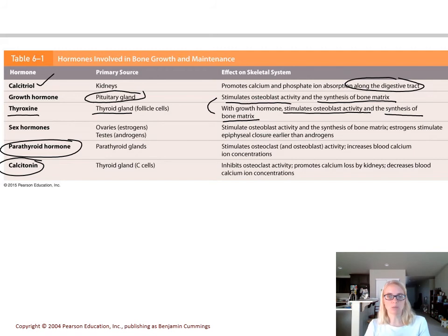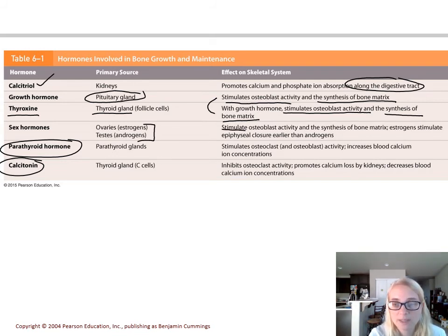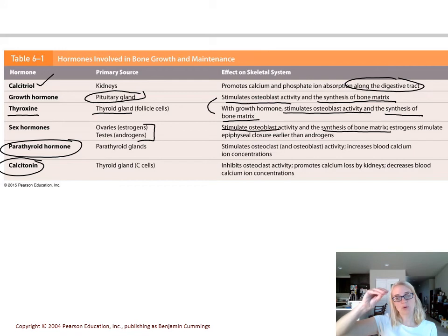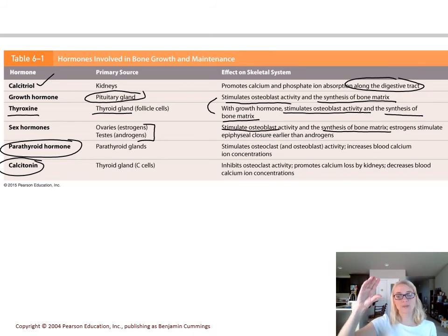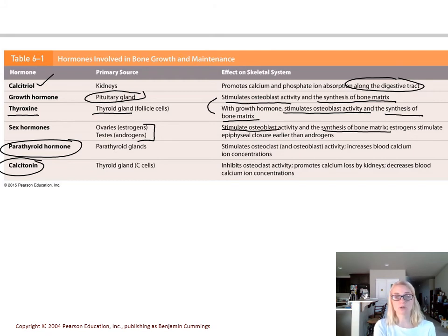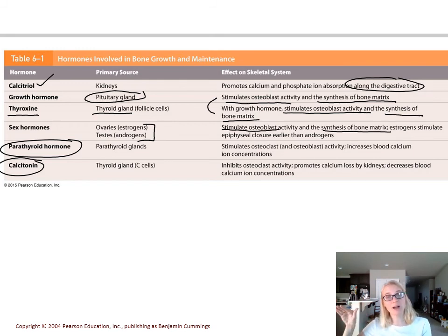Sex hormones — estrogens and androgens like testosterone — also stimulate osteoblast activity and synthesis of bone matrix. Estrogens stimulate these sex hormones to close the epiphyseal plates during puberty. You get big growth spurts because of growth hormone and sex hormones, but then the plates close, and usually toward the end of puberty you reach your adult stature. Plates close sooner in girls because estrogen outpaces epiphyseal closure — that may be why, in general, men are taller on average than women, since they have a little more time of growth during puberty before those epiphyseal plates close.